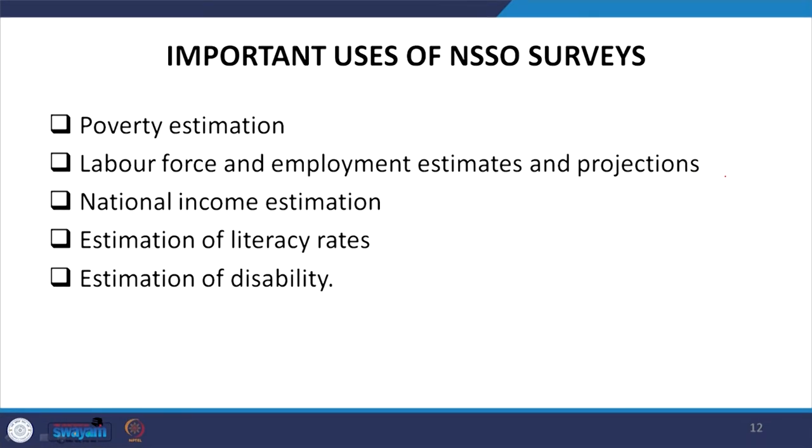Important uses of NSS surveys include: poverty estimation, estimating or projecting employment figures (since we have a time component over many years, projection for another 5 to 10 years ahead is possible), national income estimation, estimation of literacy rates, and estimation of disability. We need these for some kind of policy framework for future generations.